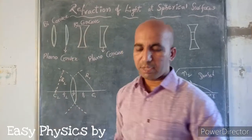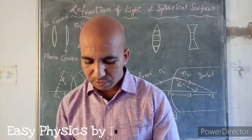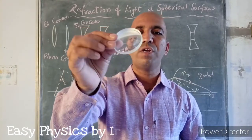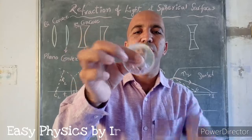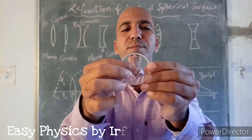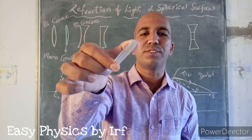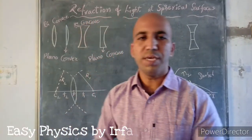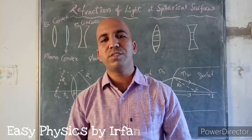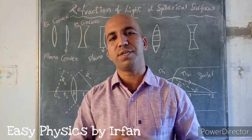The next type is the biconcave lens, which is opposite to the convex lens. The biconcave lens is very thin at its middle and very thick at the edges. Similar to that, the plano-concave lens has a plain surface at one end and a curved surface at another end.